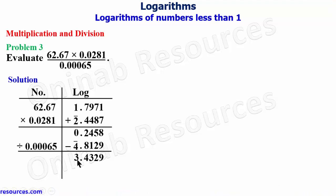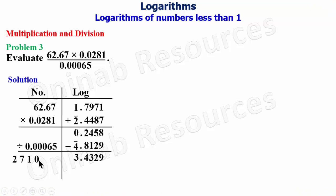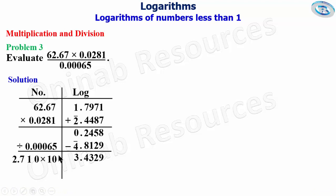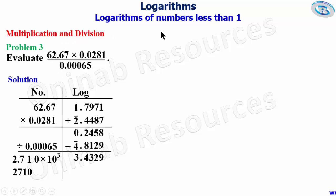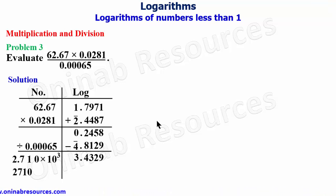The integer part is 3. We keep the integer part and check the fractional part from the anti-log table: .43 under 2, difference 9, gives 2710. Place the point immediately after the first digit and multiply by 10 to the power of 3. The ordinary form of the answer is 2710. That's all for problem three. Our next video covers powers and roots of logarithms of numbers less than one. Hope you enjoyed the video — goodbye!